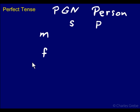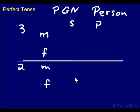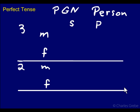So what we'll do here for our chart for verbs — we'll have third person with masculine, feminine, singular and plural. Then we'll have second person with masculine, feminine, singular and plural as well — four pieces here and four there. Then we'll have first person. Now first person has no distinction in gender, so it's just common — you call it common when it's the same form for masculine and feminine.